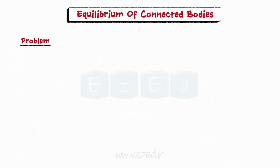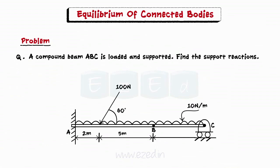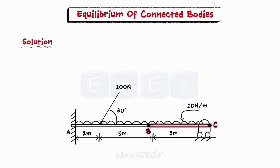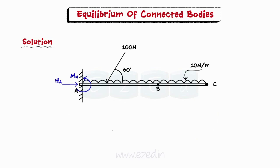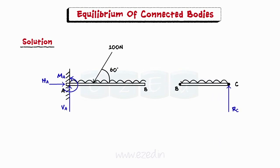Consider the following problem. A compound beam ABC is loaded and supported; find the support reactions. Note that B is an internal hinge. The system has two bodies, AB and BC. The external supports consist of a fixed support at A and a roller support at C. The bodies are internally connected by a hinge at B. The FBD of the system shows four external unknown reactions. Since conditions of equilibrium can only handle three unknowns at a time, we will need to isolate the system to find all support reactions.